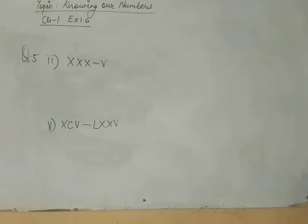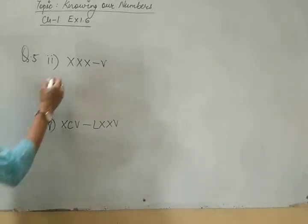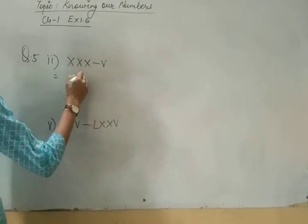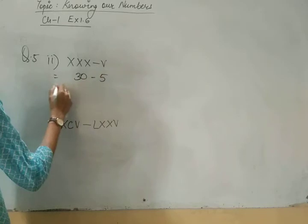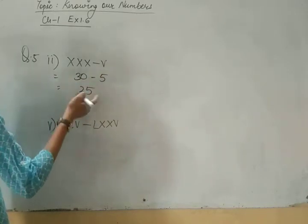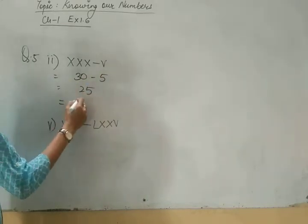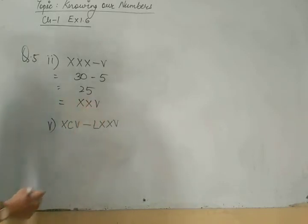Now in fifth question, you have to solve. You have to give answer. First change it into Hindu Arabic. Solve the question. Then again change it into Roman numeral. XXX means 30 minus 5. 25. Now again write 25 in Roman numeral. XXV. Clear?